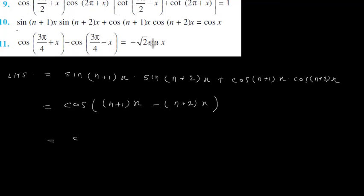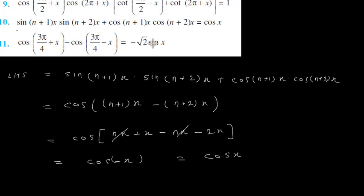So this is cos of (n plus 1)x minus (n plus 2)x. Opening the bracket: nx plus x minus nx minus 2x. nx and nx cancel, x minus 2x is minus x. So this is cos(minus x), and cos(minus x) is cos x, which is your RHS. LHS is equals to RHS.